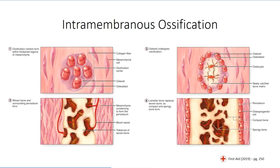The process begins when mesenchymal stem cells condense into clusters called nodules. Cell-cell interactions trigger the cell cluster to differentiate into osteoprogenitor cells and ultimately into osteoblasts, which begin to secrete osteoid in a radiating pattern to surround the cells at the center of the nodule. The osteoid gradually calcifies, which triggers further differentiation of the central osteoblasts into osteocytes. The osteoblasts along the periphery continue to secrete osteoid and the nodule continues to expand in size.